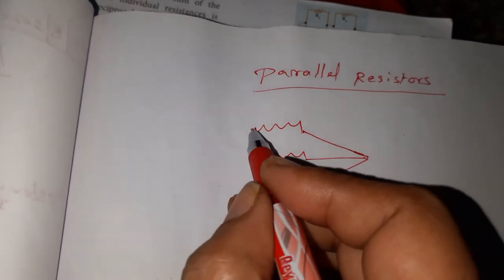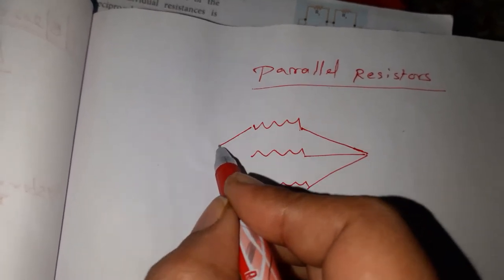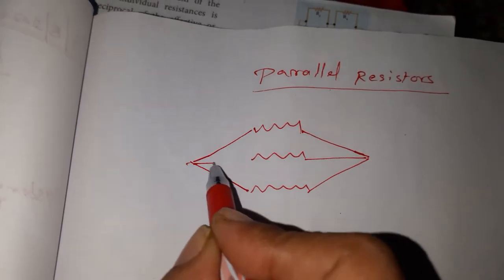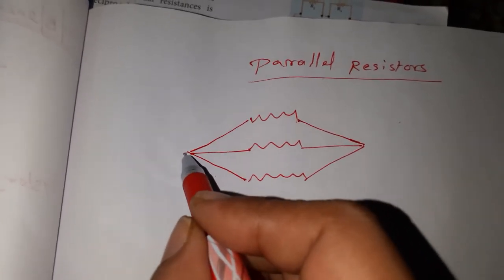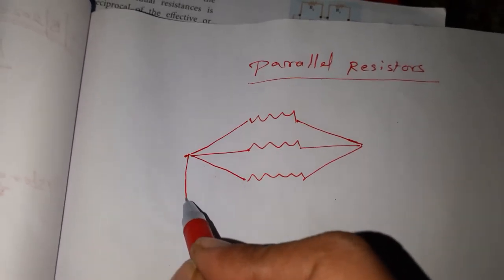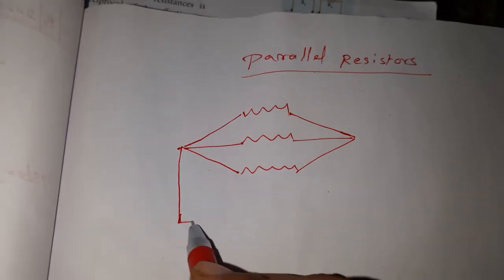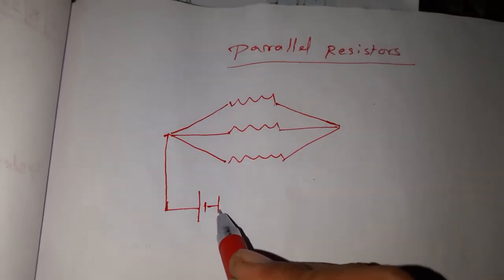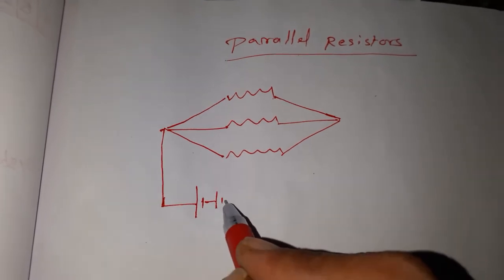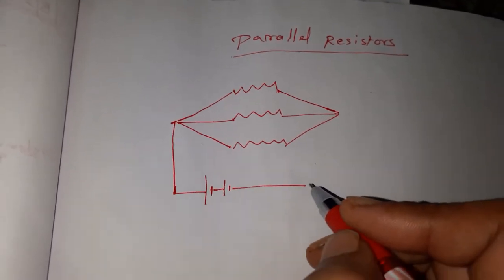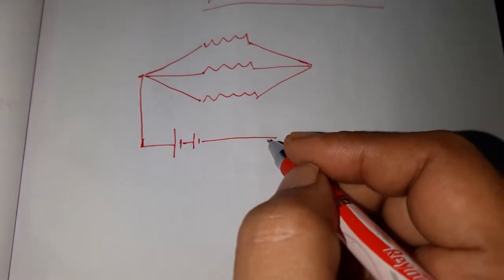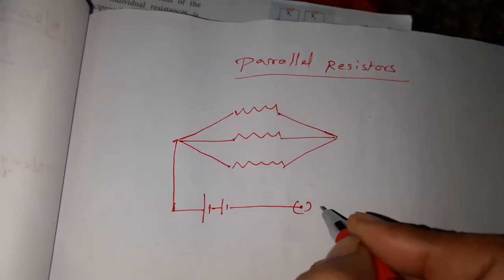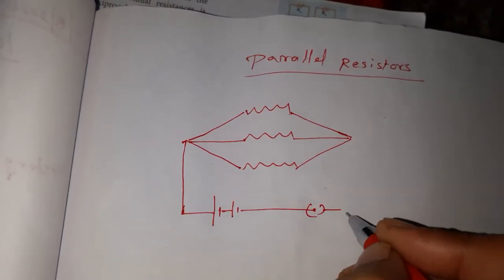Not in an end-to-end connection — one after another, the connection will be there. Here it is not a single loop; there will be three loops. How many resistors you are connecting, that many loops will be there. Battery, key, and an ammeter.